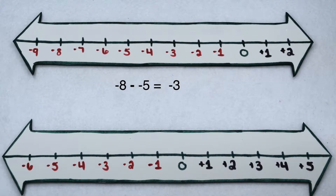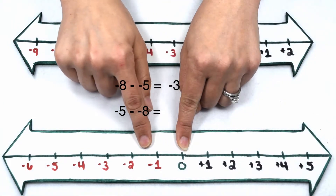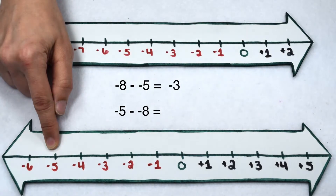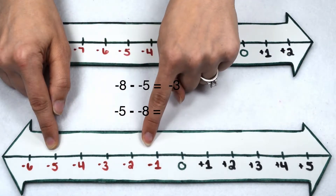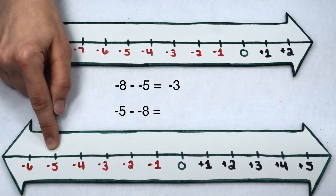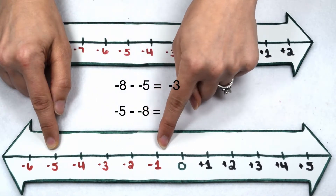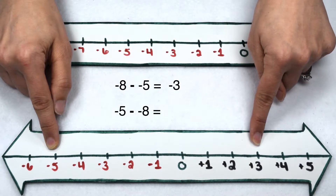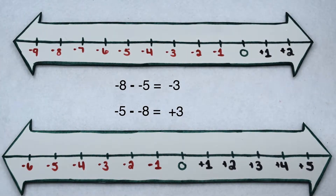Let's reverse that problem now — negative 5 minus negative 8. Again, I'm going to start at 0. Negative 5 is going to send me 5 places to the left. I want to then take away negative 8, but I don't have enough places to think of it as taking away. Instead, if I think of it as doing the opposite of negative 8, that means instead of going 8 places to the left, I need to move 8 places to the right. When I move 8 places to the right, that lands me at positive 3. So negative 5 minus negative 8 gives me positive 3.